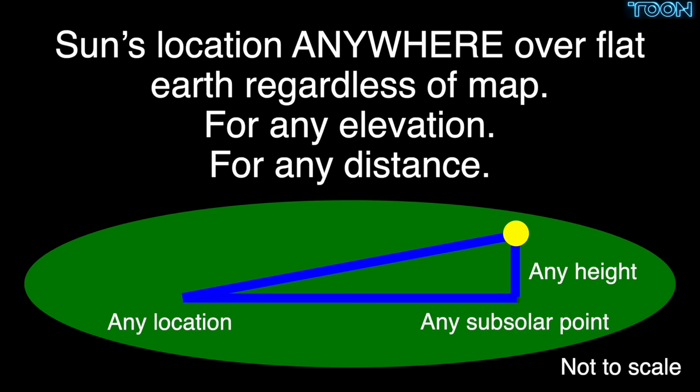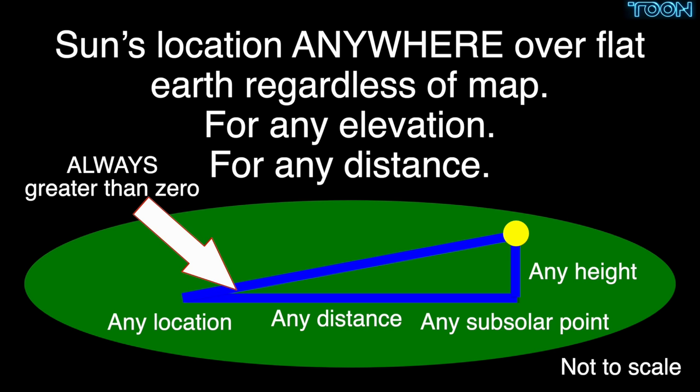Catchphrases and word salad are not a substitute for computing the consequences of your claims. It gets worse for flat earth. We can apply this test for the general case where the height of the sun and the distance across the surface are unknown. Applying perspective will always result in a positive angular elevation of the sun — the sun can never set on flat earth. If you disagree, provide the method to compute the consequences for flat earth. Lacking that, flat earth is absolutely impossible.